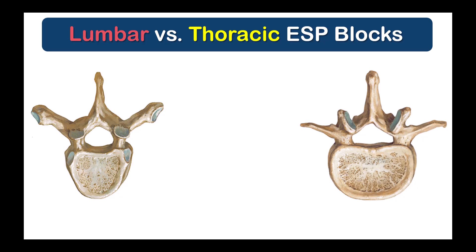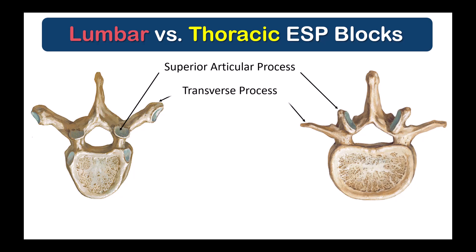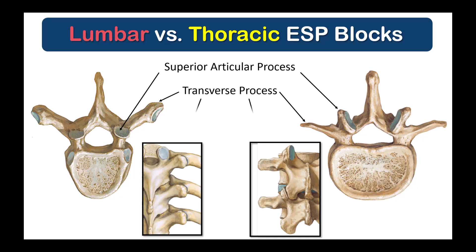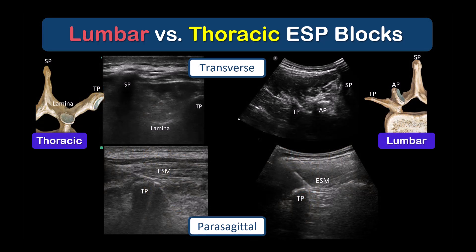First, the morphology of the lumbar vertebrae is different. The articular processes are more prominent, the transverse processes are significantly longer, and they do not articulate with any ribs. As a result, the ultrasound imaging of the lumbar and thoracic vertebrae look quite different in the transverse view compared to the parasagittal view.